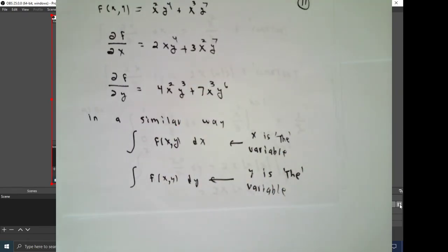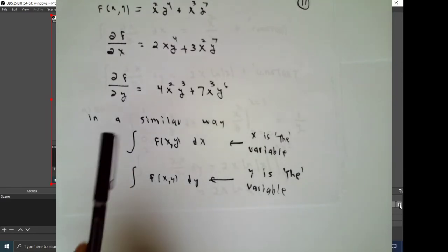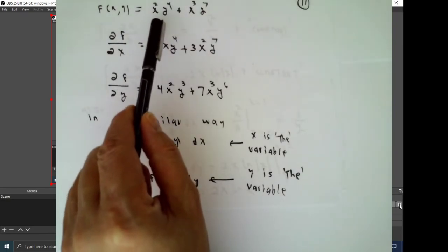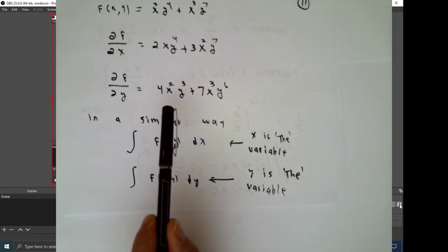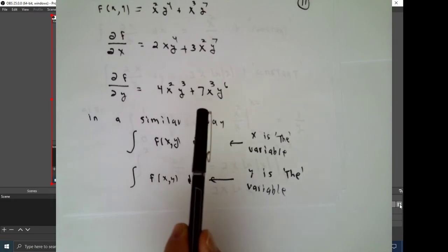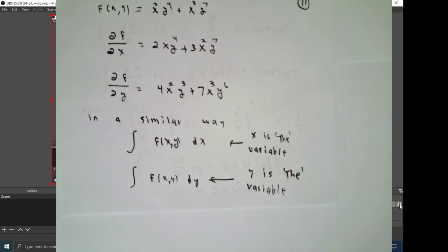On the other hand, if you think of y as being the variable and x as being a constant, when we calculate partial of f with respect to y, I'll have the constant x squared multiplied by the derivative of the variable to the fourth power. So we'll end up with 4 times x squared times y cubed plus x cubed is regarded as a constant. If y is the variable, the derivative of y to the seventh is 7 times y to the sixth power. This is what we mean when we say partial derivatives.